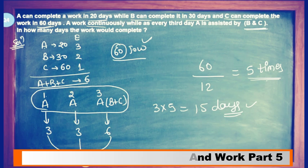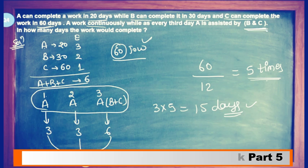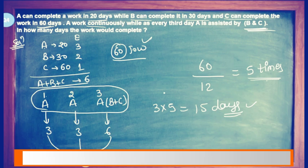A works continuously. Every third day, A is assisted by B and C. So the first day A works, second day A works, third day A plus B plus C work together. Then on the 4th day A, 5th day A, 6th day A plus B plus C — this cycle repeats.